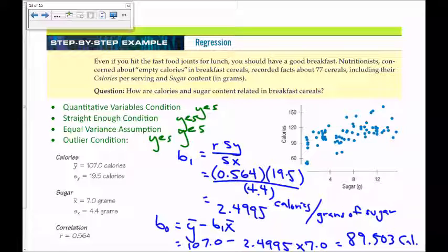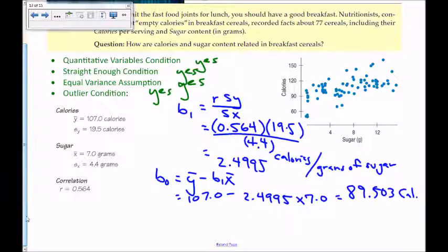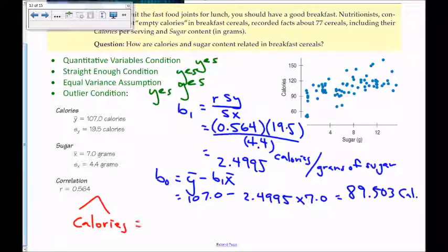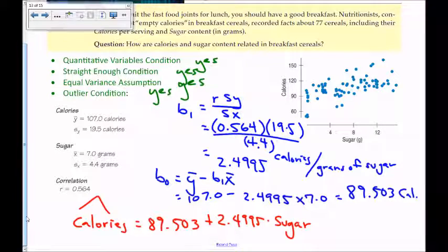Knowing what those mean in context is important. So putting them together in our line of best fit: calories-hat is equal to 89.503 plus 2.4995 times the amount of sugar in grams per serving.